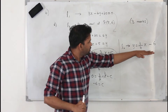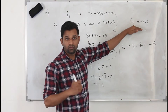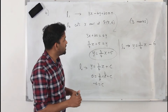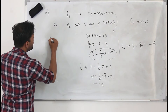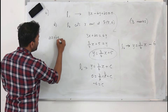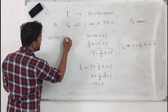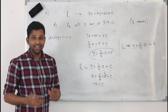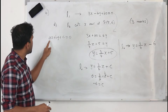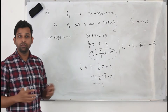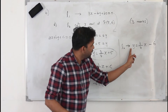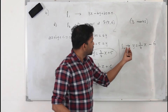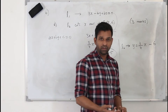But if you stop here, you won't get all 3 marks, because the question clearly says to write the equation in the form Ax plus By plus C equals 0, where A, B, C are integers. The coefficient 3/4 is a fraction, so you need to remove it.